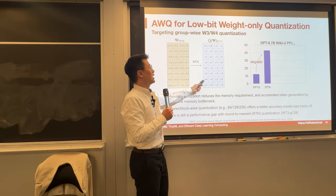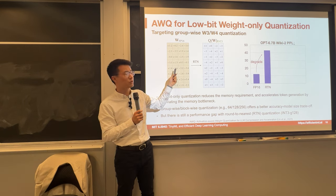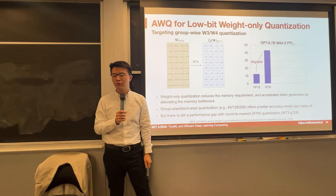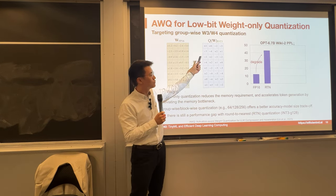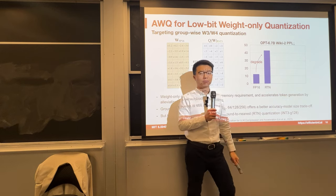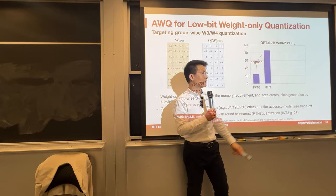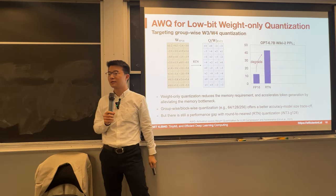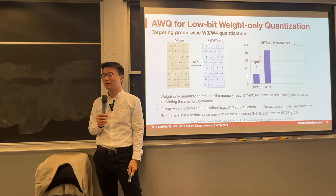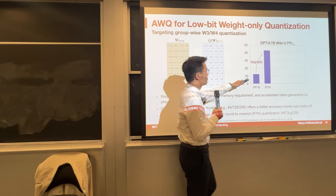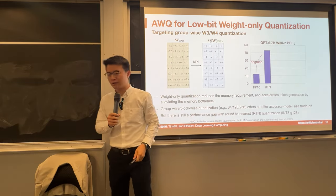Naively doing that — taking this weight matrix from FP16 representation and quantizing it using 3-bit — we immediately see perplexity degradation. The lower the perplexity, the better the quality. Unfortunately, there's a huge jump in perplexity if we naively quantize. Round-to-nearest quantization using 3-bit hurts the accuracy a lot.